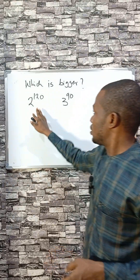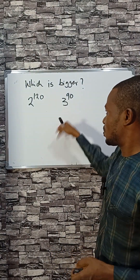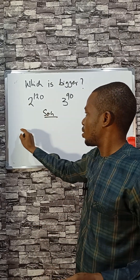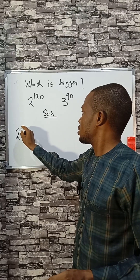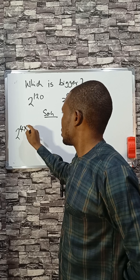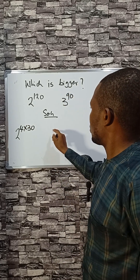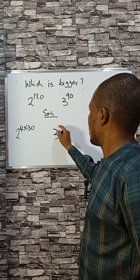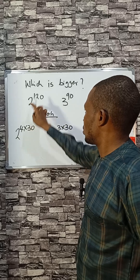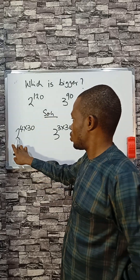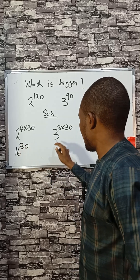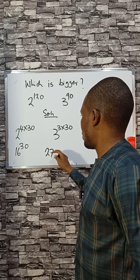Which of this is bigger — this or this? 2 raised by 120: we can write 120 as 4 times 30, so this becomes 2 raised by 4, which is 16, giving us 16 raised by 30. And 3 raised by 90: we can write 90 as 3 times 30, giving us 27 raised by 30.